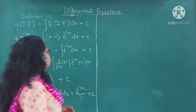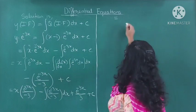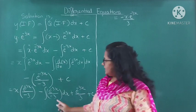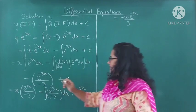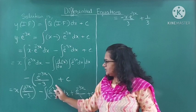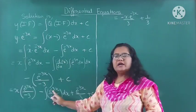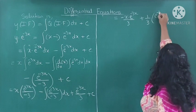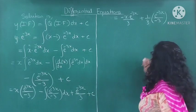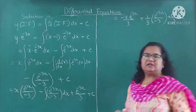This minus into minus will become plus. So this term becomes plus e raised to minus 3x upon 3, and plus C as it is. Integration of e raised to minus 3x is e raised to minus 3x upon minus 3. Inside the integration it is also e raised to minus 3x upon minus 3. This minus and minus are treated as plus.